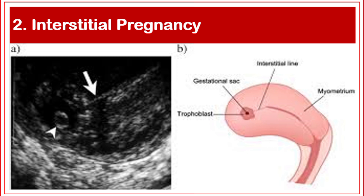Ultrasound findings in interstitial pregnancy: first, an eccentrically located gestational sac surrounded by a thin layer of myometrium less than five millimeters. Second, assess the rest of the uterus, as an eccentrically located intrauterine pregnancy can occur secondary to fibroids, contractions, anatomical anomalies, or a normal variant called angular pregnancy.